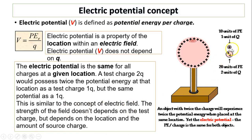The field at one location is the same regardless of test charge. A bigger test charge results in a bigger electric force — very much like mass: the more mass you have, the more weight you have, but your mass does not affect the field at that location. Similarly, the test charge does not affect the potential or the field at that location.